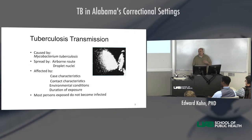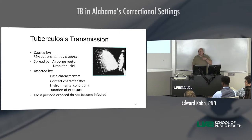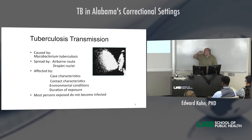If somebody has TB in a lymph node — swelling in the neck or under the arm — they're not going to transmit that because it's totally contained. But if it's in the lungs, that generates cough, like any pneumonia would. And when it's coughed, it's spread out into the air.